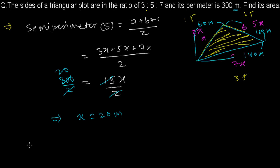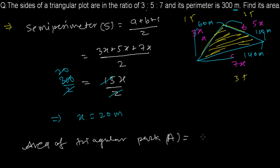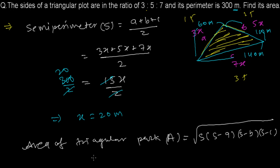The area of the triangle is given by Heron's formula: Area = √(s(s−a)(s−b)(s−c)). Here s is the semi-perimeter, which is 300/2 = 150.